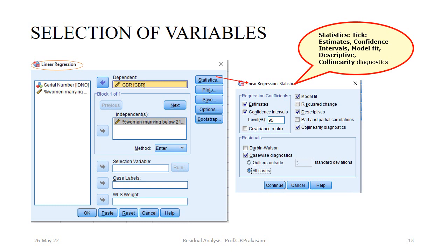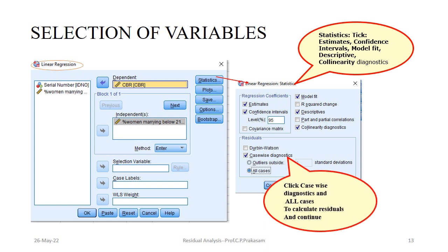Down below, you can see the Residuals section. In that, there is a Durbin-Watson test, Casewise Diagnostics, and outliers outside whatever standard deviation you specify, as well as All Cases. If the number of cases is very large, you can have outliers outside two or three standard deviations. At present, observations are only 21, therefore we will tick Casewise Diagnostics and All Cases. That will calculate the residuals.